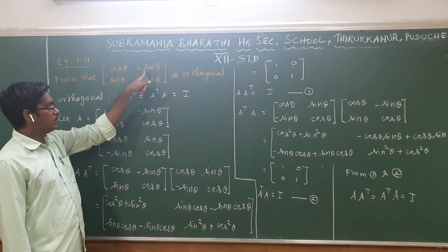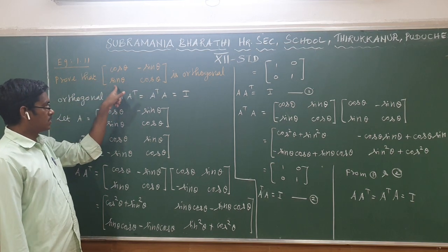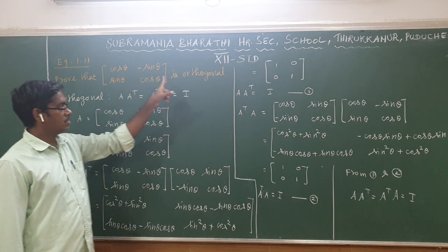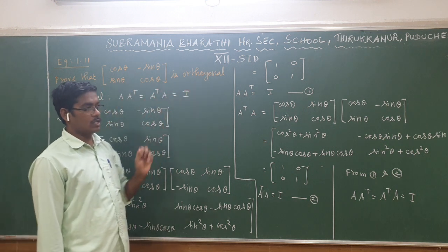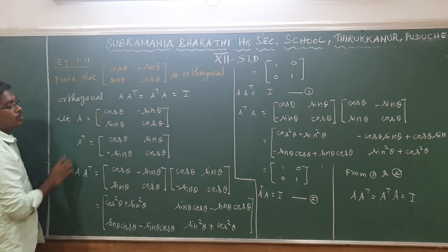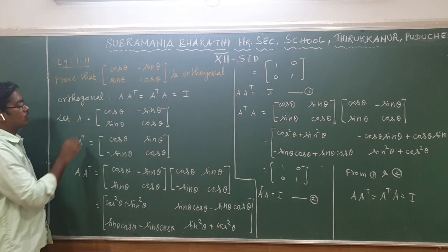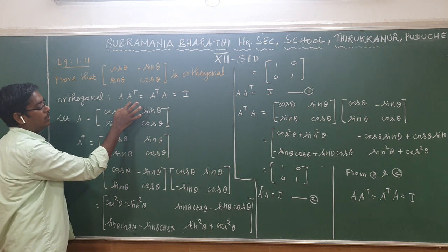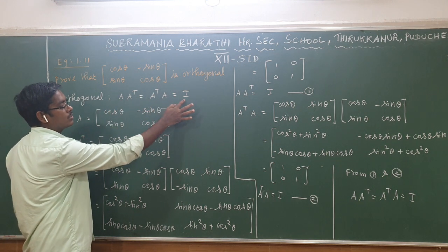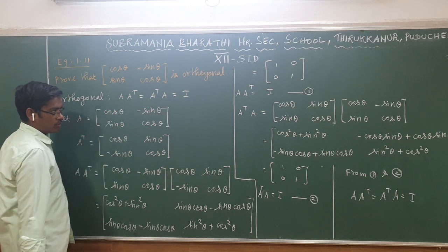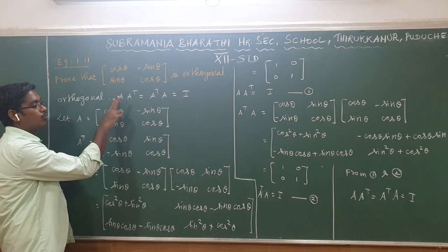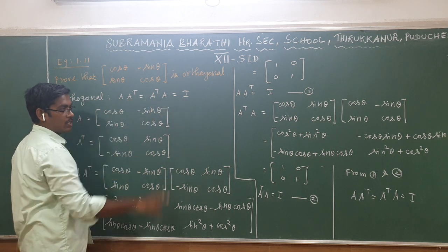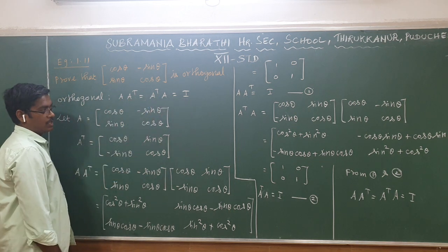Prove that the matrix [cos θ, -sin θ; sin θ, cos θ] is orthogonal. A matrix is orthogonal if A·Aᵀ = Aᵀ·A = I, that is, when a matrix is multiplied by its transpose, the result is the identity matrix I.